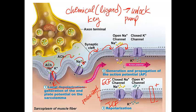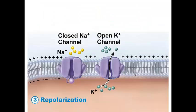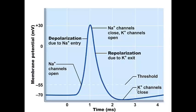After sodium goes in, potassium goes out in the next phase, leading to repolarization — the opposite of the depolarization phase. This repolarization is shown in an enlarged graph and is due to potassium efflux, meaning potassium leaving the cell.